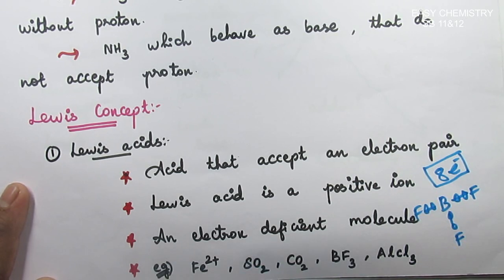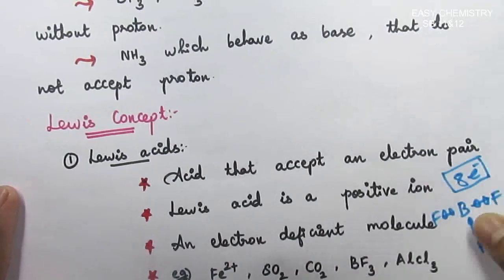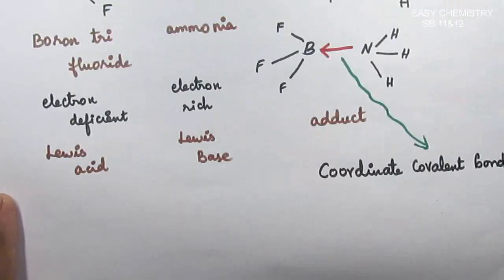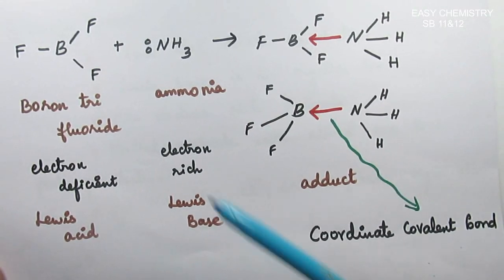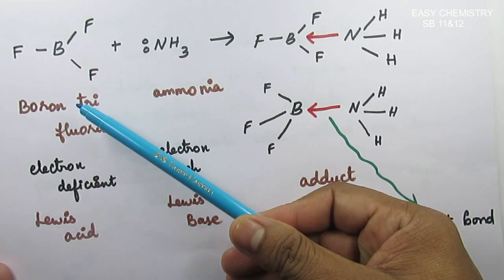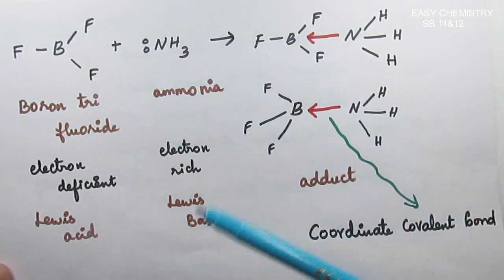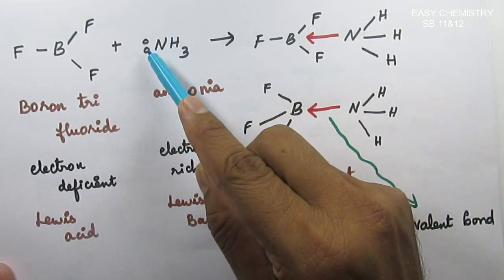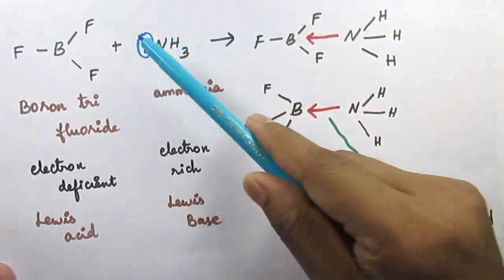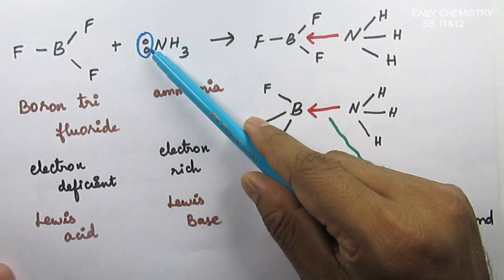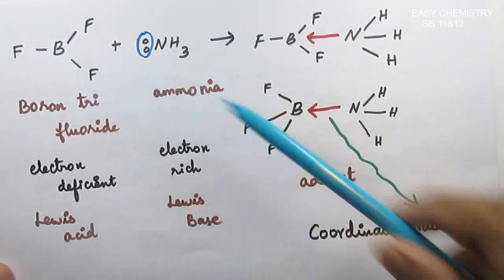Let us discuss one example to understand Lewis concept, that is acid. If you look at BF3, it reacts with ammonia. If you look at this reaction, there are two electrons, lone pair of electrons. So in the lone pair of electrons, who can get it, can share it. So we can share it.